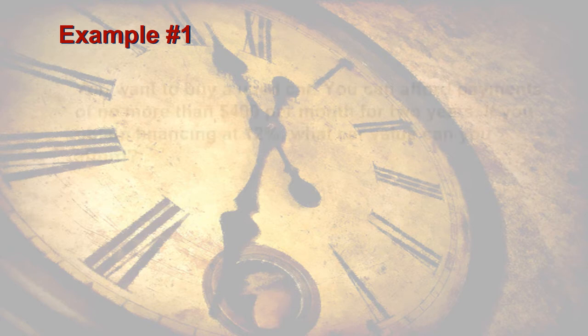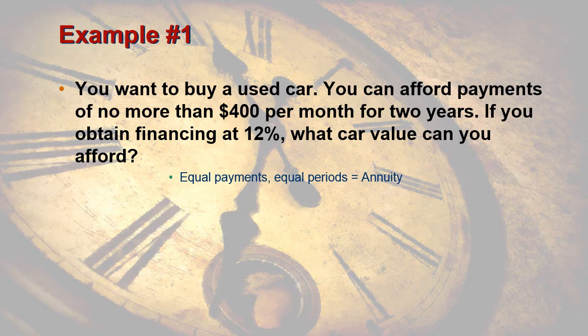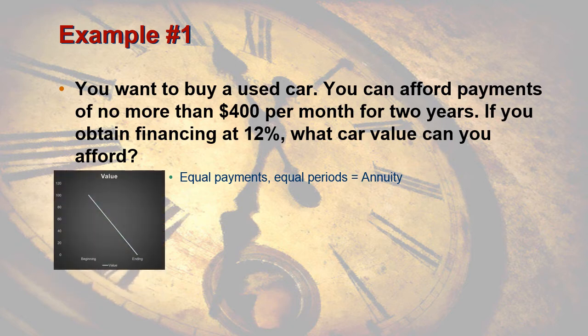First example: you want to buy a used car. You can afford payments of no more than $400 per month for two years. If you can obtain financing at 12%, what car value can you afford? First of all, do we have an annuity problem? We do — we have equal payments and equal periods. We're paying $400 every month for two years. Second, you can see we owe an amount at the beginning but we're hoping to owe nothing at the end. So do we have a present value or a future value? In this case, we have a present value — we're going from something to nothing.